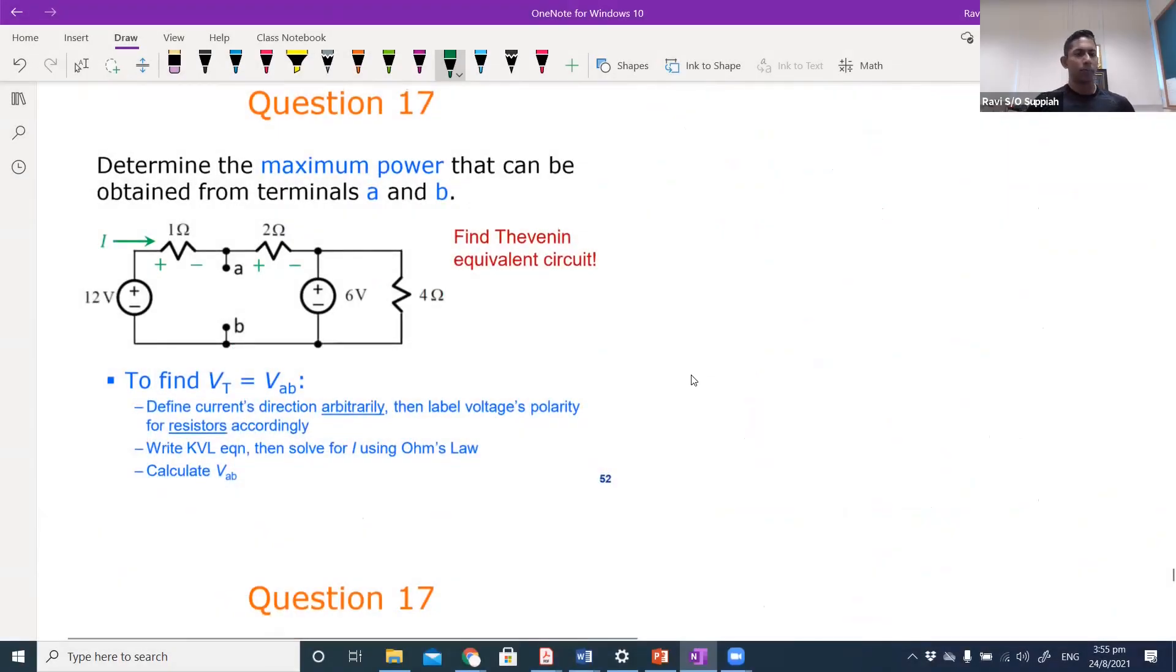Okay, question 17. Again, the same thing - the maximum power theorem. We need to find the Thevenin equivalent circuit between terminals a and b. To do this, we can draw a loop. If I draw a loop here, you can say that a and b is already an open circuit, so the open circuit voltage is actually the terminal equivalent. It'll be 12 volts, plus the current here is i.